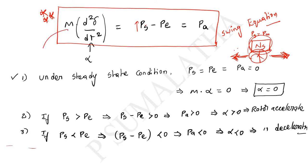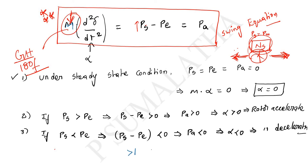The M value is M = GH/(180f), as derived previously. This applies to a single machine with a single load having one inertia constant. For systems with more than one machine, we need to find the equivalent inertia constant. In the next class, we will discuss how to find the M value for a multi-machine system.